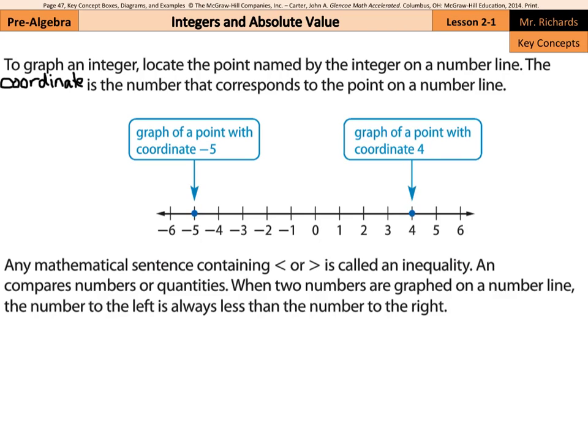Any mathematical sentence containing the less than sign or greater than sign is called an inequality. An inequality compares numbers or quantities. When two numbers are graphed on a number line, the number to the left is always less than the number to the right. The smaller numbers are always on the left side and the bigger numbers are always on the right side of the number line.